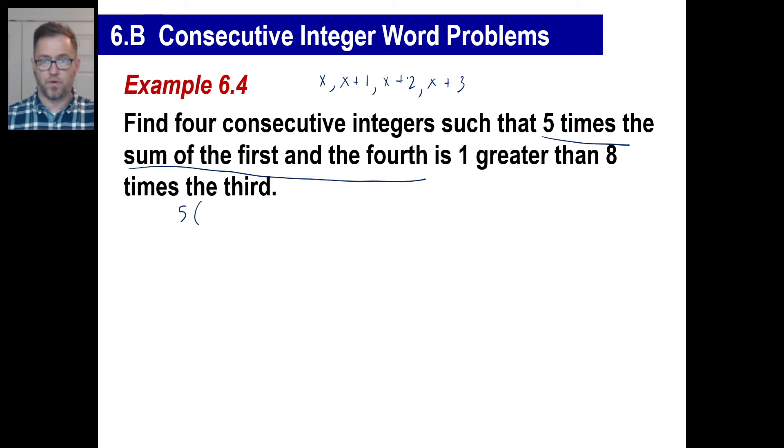In other words, 2x plus 3. This is 1 greater than 8 times the third. Well, let's just figure out 8 times the third. 8 times the third would be 1, 2, 3. That'd be 8 times that.